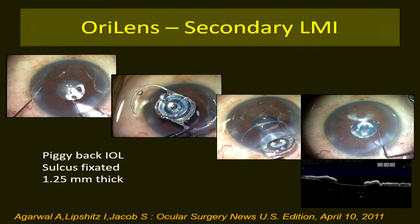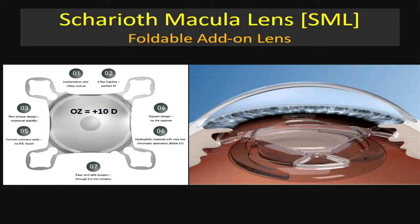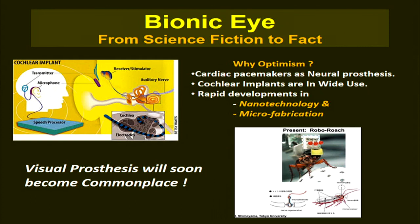A newer foldable lens known as the SML, developed by Shariot and available for about two years, is designed only for near vision. It has a central optical zone with a +10 diopter addition. When looking at near objects, the triad of convergence, accommodation, and miosis cuts off peripheral rays, directing light through the central zone to produce a magnified view. When looking at distance, the pupil enlarges and peripheral vision normalizes.